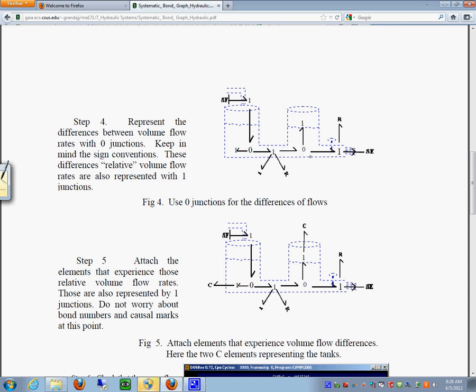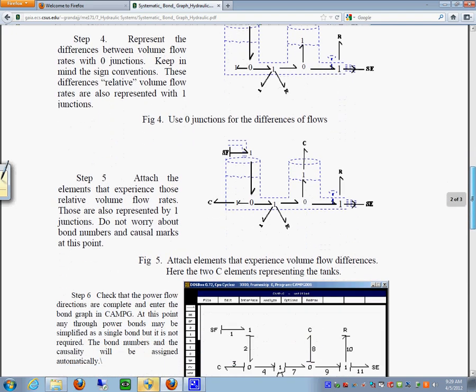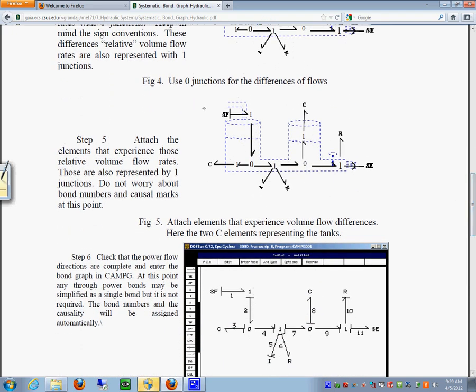Or the flow that comes in here minus what comes out is what is accumulated, right? So you put that in here. You put the two C elements that see the difference between those flows. And we basically have completed the bond graph for this.